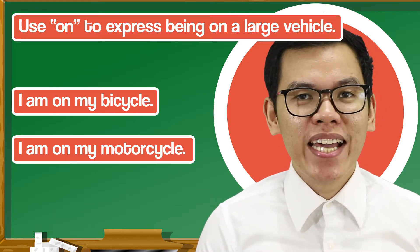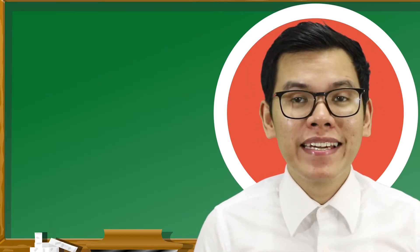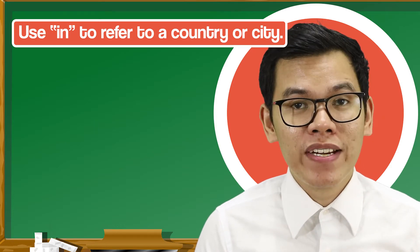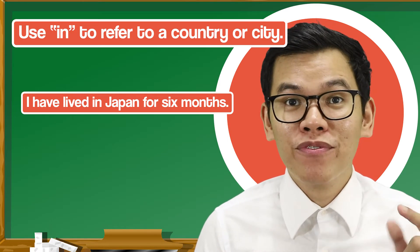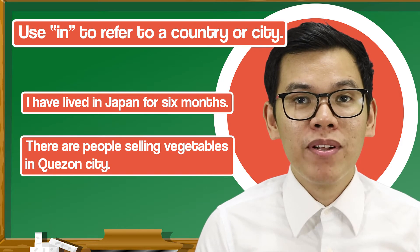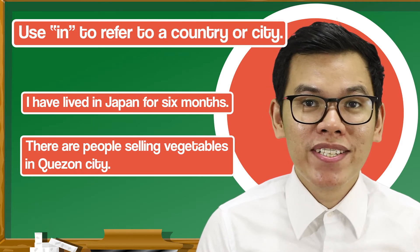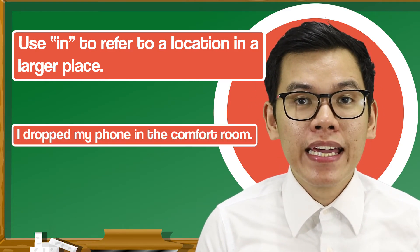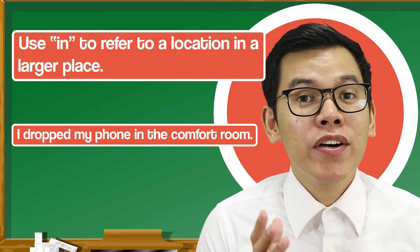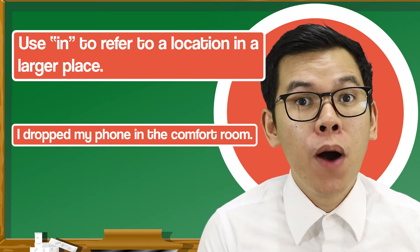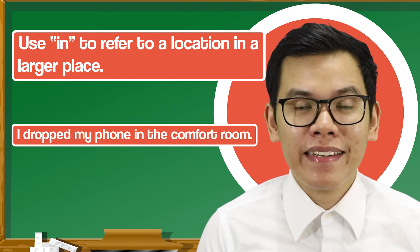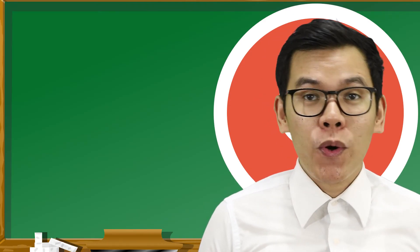Now let's talk about using 'in' to denote place. The first rule is we use 'in' to refer to a country or a city — for example: 'I have lived in Japan for six months' and 'There are people selling vegetables in Quezon City.' The next rule is we use 'in' to refer to a location in a larger place, like 'I dropped my phone in the comfort room.' If the location is part of a larger place — a building, school, or any large establishment — use 'in.'